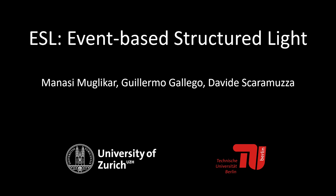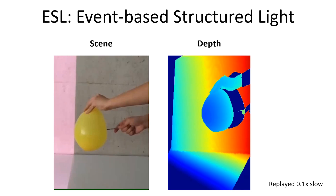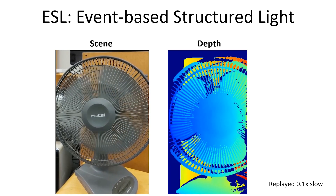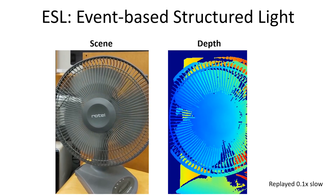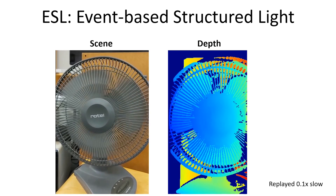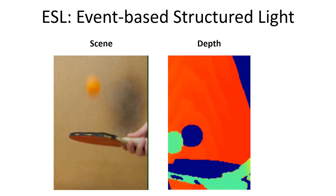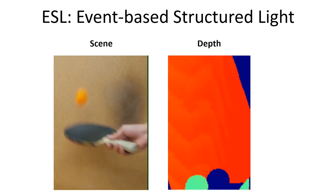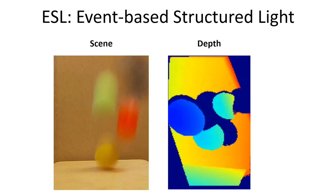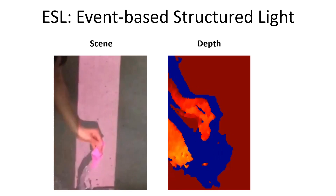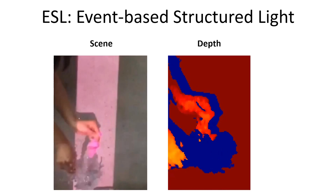We present ESL, Event-Based Structured Light. ESL is a novel method for structured light depth estimation with event cameras. It excels in highly dynamic scenarios which are difficult for frame-based depth sensors. Estimating depth in these scenarios is challenging since it requires high temporal resolution and robust performance in difficult illumination conditions.